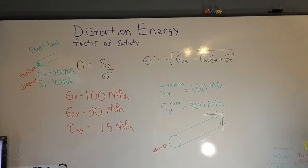Alright, pretty easy problem today. We're going to be calculating factors of safety using distortion energy theorem. And we're just going to pick a random material. Let's say that the yield strength in tension and compression is 300 MPa.